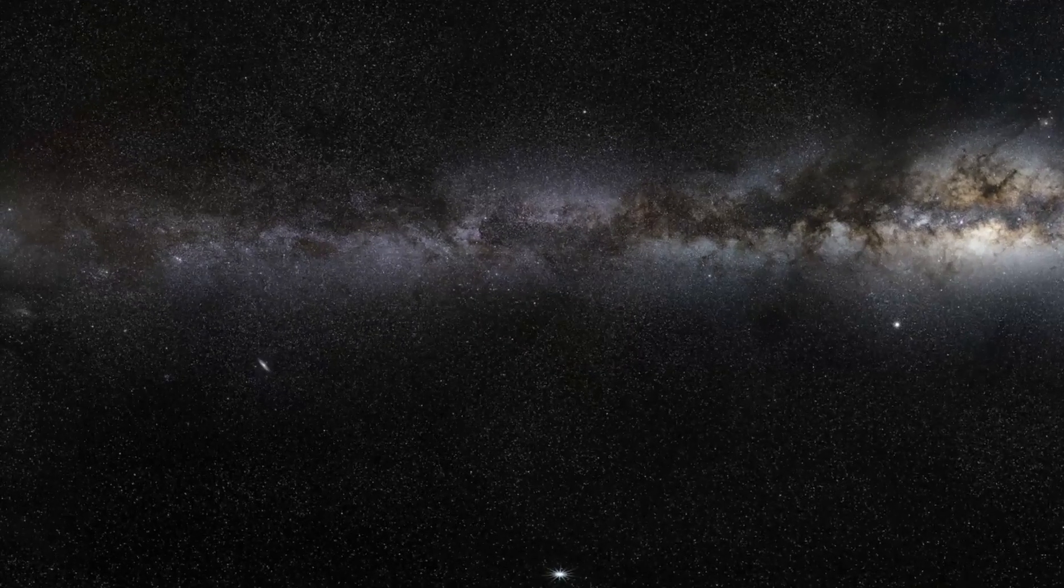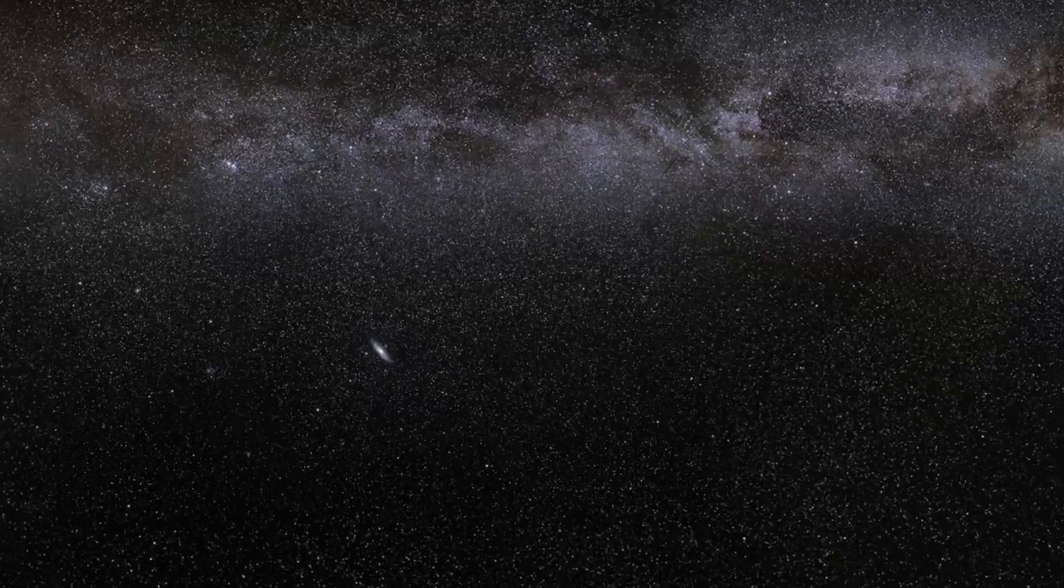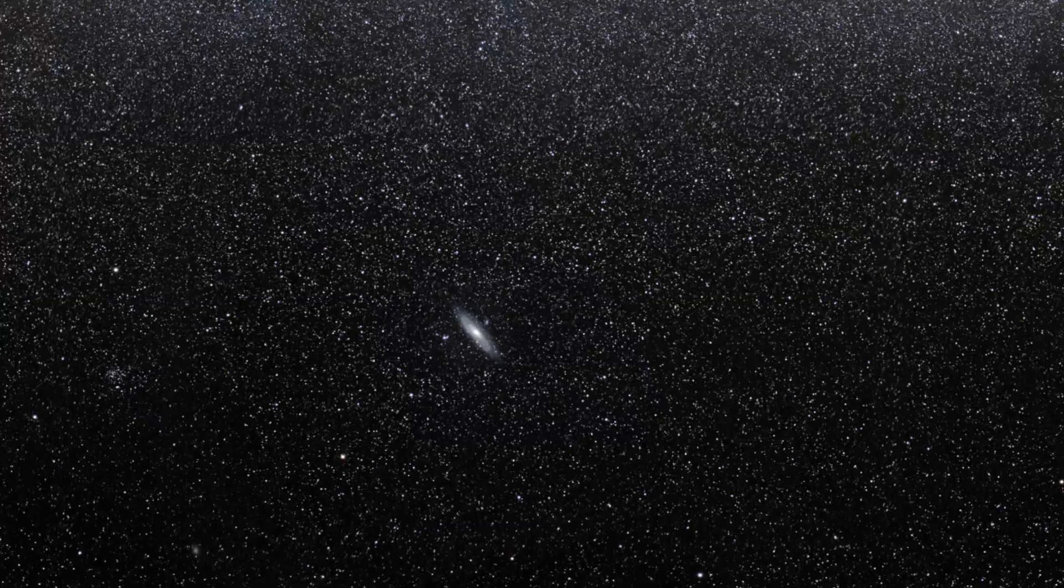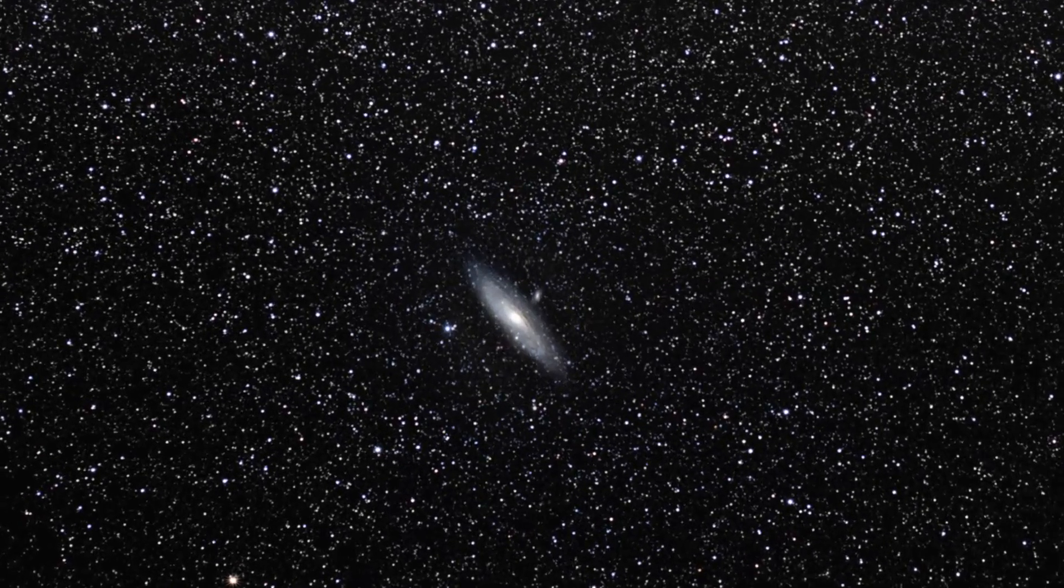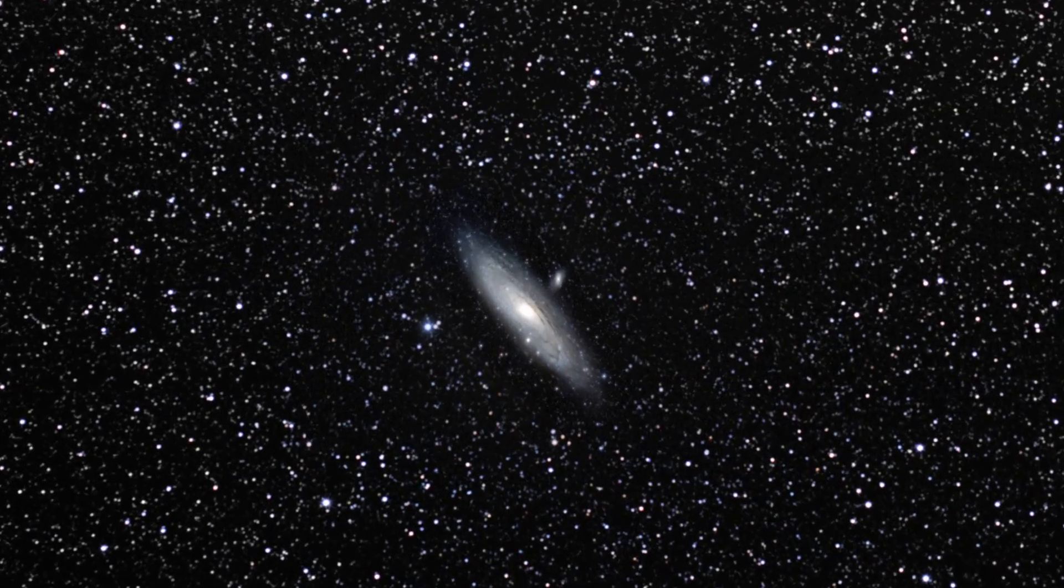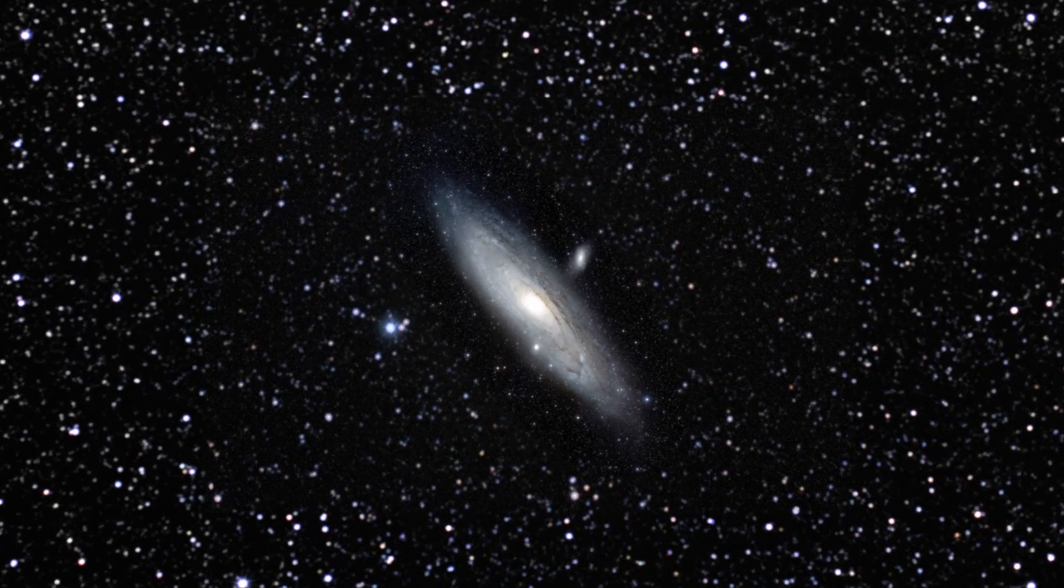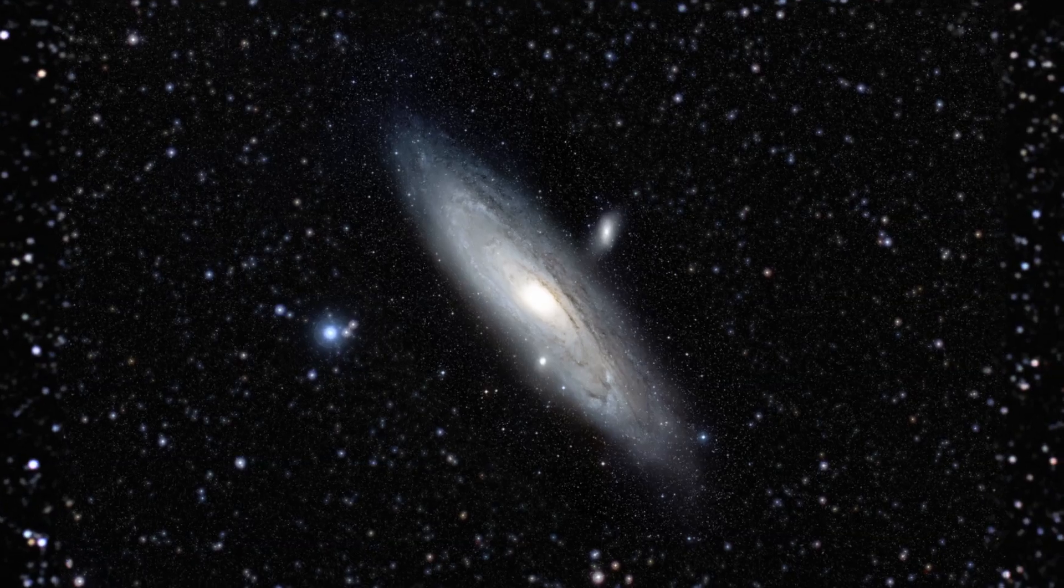The Andromeda galaxy is one of this group. It is nearer to Earth than any other spiral galaxy, which means that we have a particularly good view of it. In fact, the Andromeda galaxy is one of the largest objects in the night sky, several times bigger than the full moon, although of course it's much fainter.